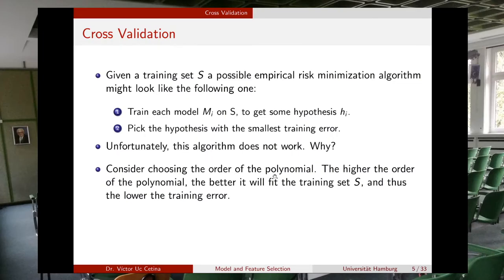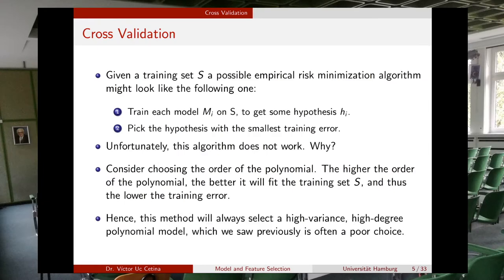Considering choosing the order of the polynomial: the higher the order of the polynomial, the better it will fit the training set and thus the lower the training error. If you keep increasing the degree of the polynomial, what you are going to get is that you are going to overfit your model. Of course, that is not good because the generalization error is going to be very large. Therefore, this method will always select a high variance, high degree polynomial, which we saw previously is often a poor choice — it leads to overfitting.